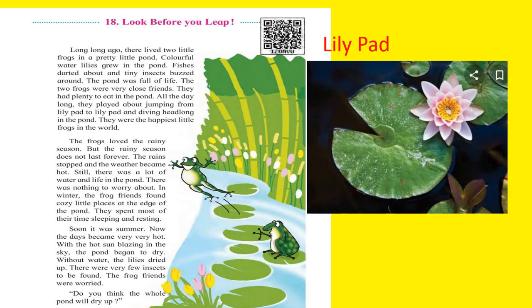Long, long ago there lived two frogs in a pretty little pond. Colourful water lilies grew in the pond. Fishes darted about and tiny insects buzzed around. The pond was full of life. The two frogs were very close friends. They had plenty to eat in the pond. All day long they played about, jumping from lily pad to lily pad and diving headlong into the pond. They were the happiest little frogs in the world.